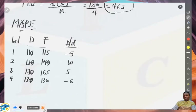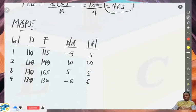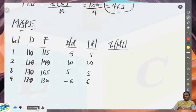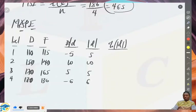Once you have the absolute values of the errors, you move on to find the percentage of these absolute values. You create a column for the percentage of the absolute values of the deviation. To find this percentage, you take the absolute value of the error term divided by the actual value, then multiply by 100.